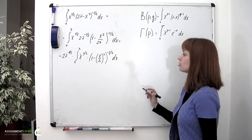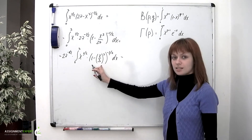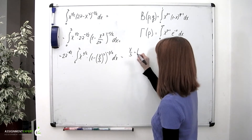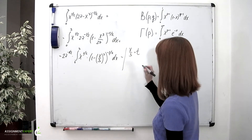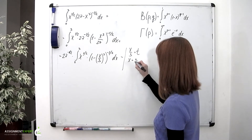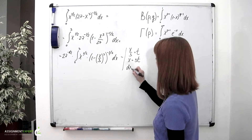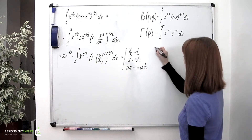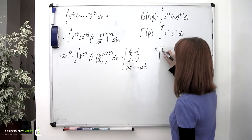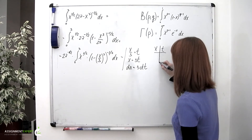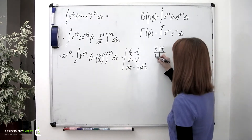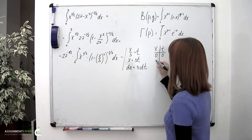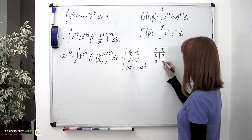Now let's make a substitution. Let's denote x over 3 as t, so we have x over 3 equals t, and therefore x equals 3t and dx equals 3 dt. Notice that the limits of integration change: we still have t equals 0 for x equals 0, and for x equals 3, t equals 1.